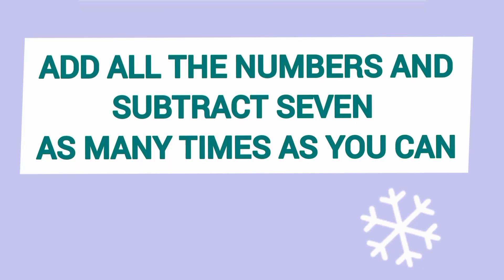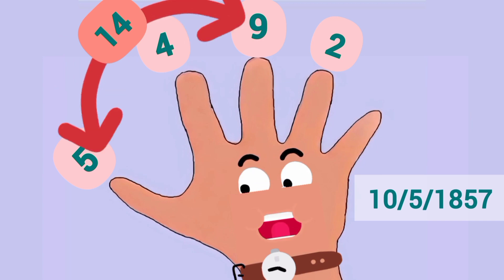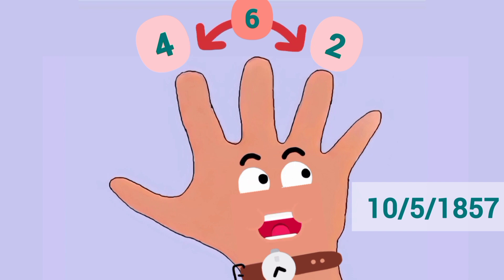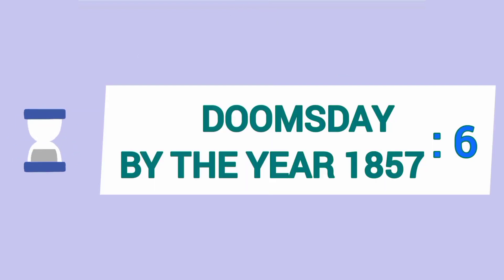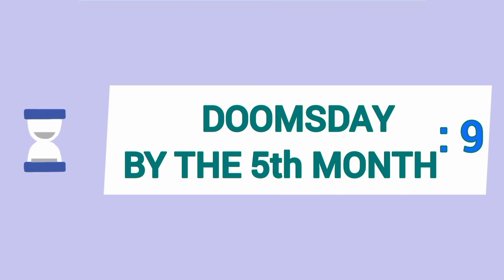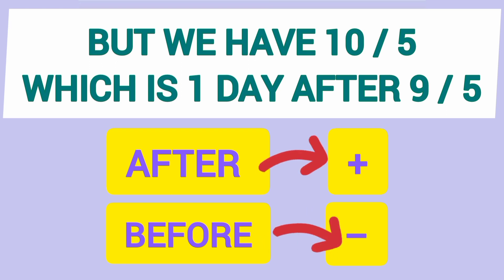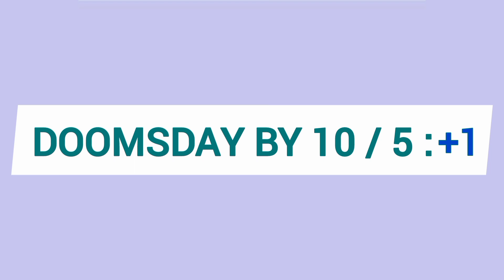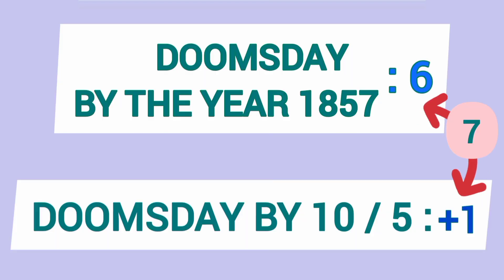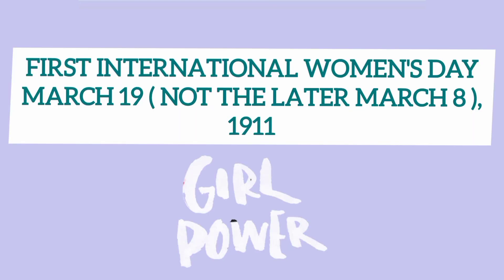Add all the numbers and subtract 7 as many times as you can: 9 and 5 add up to 14, which is 2 times 7 — so we remove those. We are left with 4 and 2; 4 and 2 add up to 6. Thus, doomsday for the year 1857 is 6. Now, doomsday by month — May is 9, but we have the 10th of May, which is 1 day after the 9th of May. After means add, before means subtract. So doomsday for 10th of May is plus 1. 6 plus 1 equals 7, which equals 0 — therefore, 10-5-1857 is a Sunday.